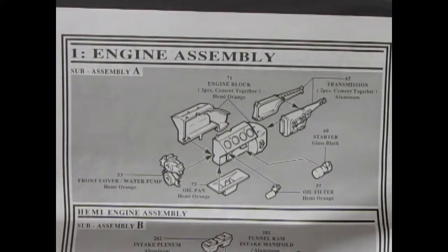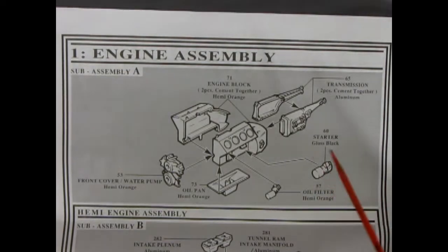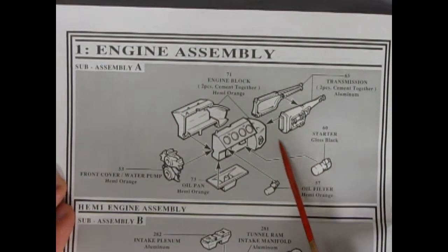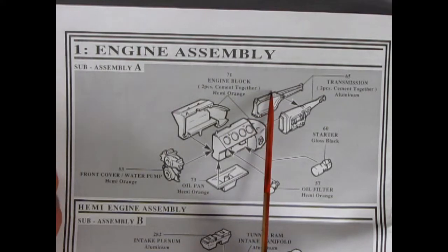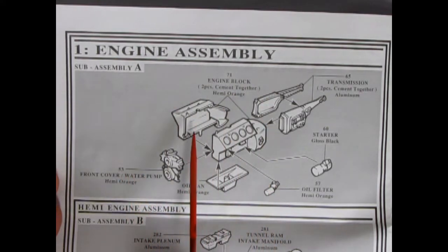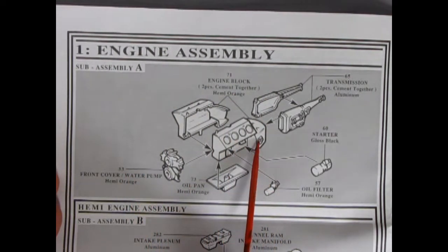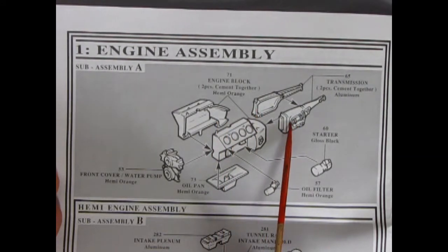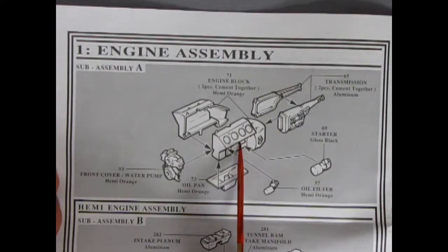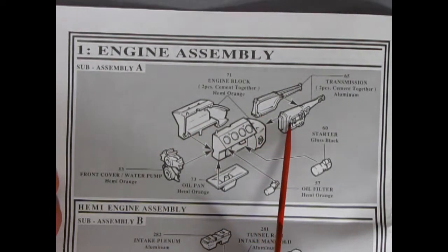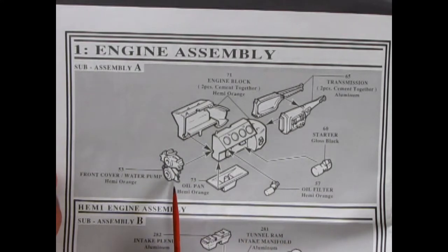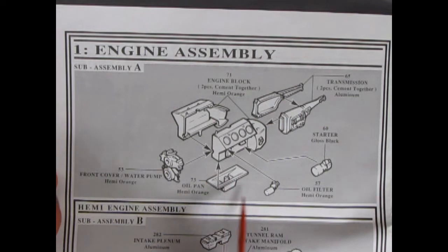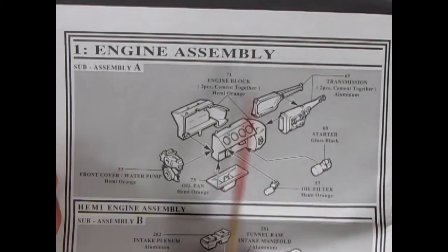Okay, this engine is the bomb. We actually get two options in this kit. So we'll take a look at this. So first off we have our basic engine assembly. So the two engine blocks include the transmission bell housing here and then you get the actual standard transmission gluing together on the back. Both the engine and the transmission are two components apiece. The front cover on water pump here. Hemi orange. Same with our oil pan. Our oil filter. And the starter here is gloss black. So they all go in just like this.